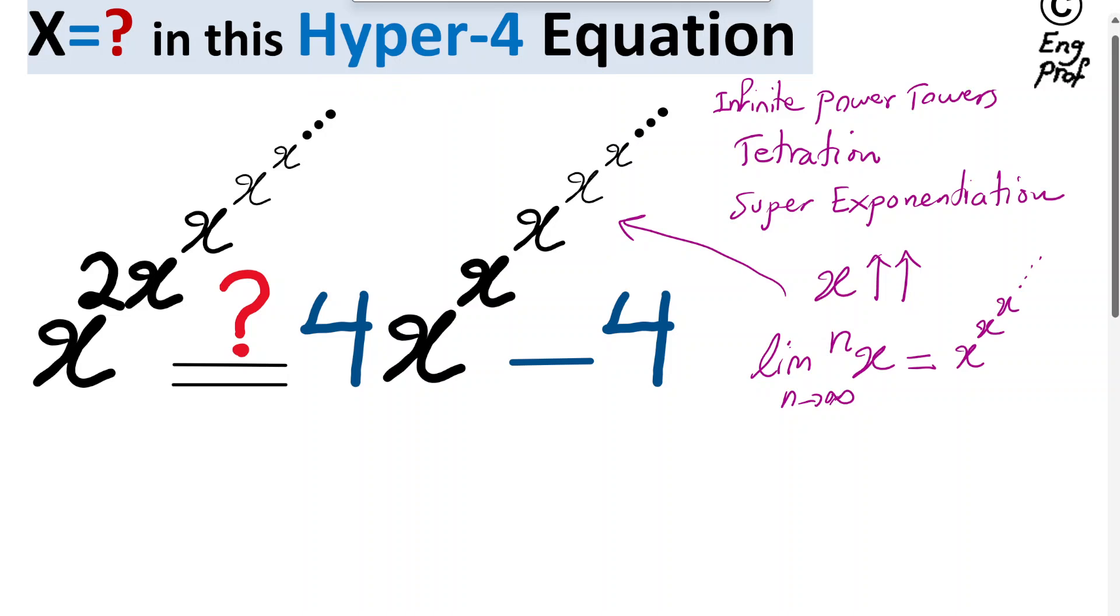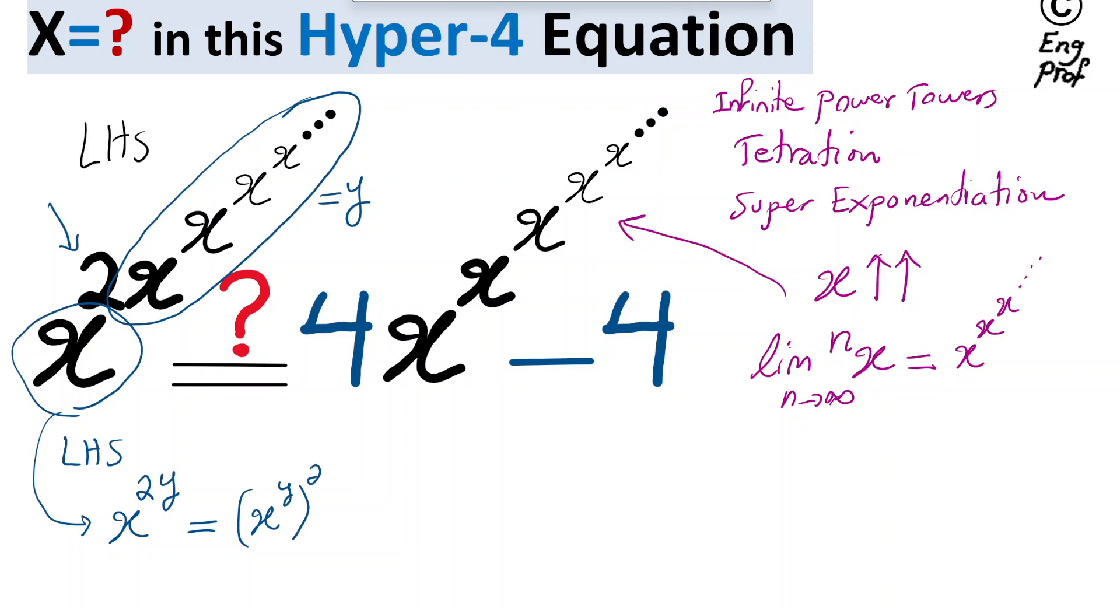Okay, so focus on the left-hand side here. Left-hand side of equation is this one. And focus specifically here. So in the exponent, we have a super exponentiation or infinite power tower. Let's refer to this one as y. So what do we have left-hand side of this equation? We have x to the power, so the base x, I'm going to keep it. And then we have 2. And then after that, we have just y. Obviously we can write this in the form of x to the power y to the power 2.